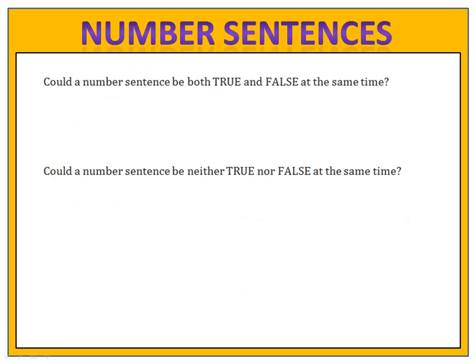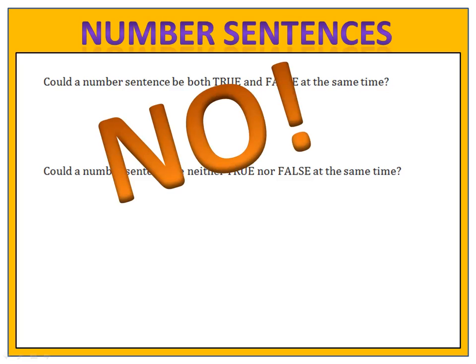A good question to ask is whether a number sentence can be both true and false at the same time, or neither true nor false. The answer is no — it's either true or it's false. It has to be one or the other, and it cannot be both at the same time.